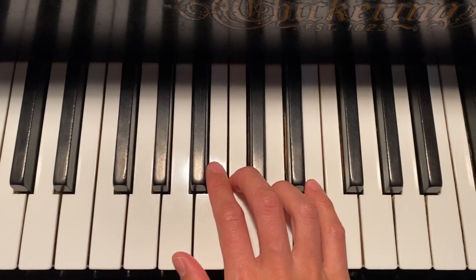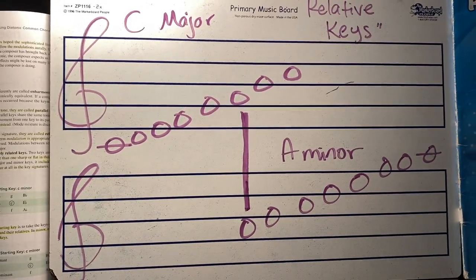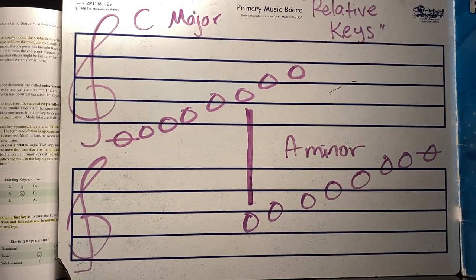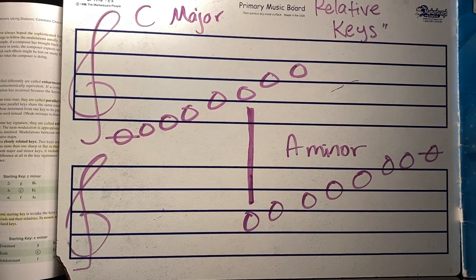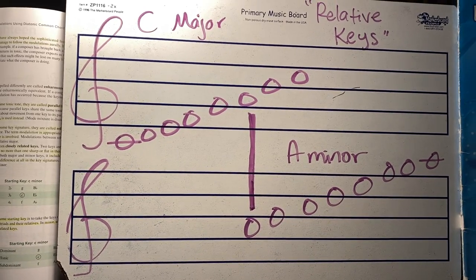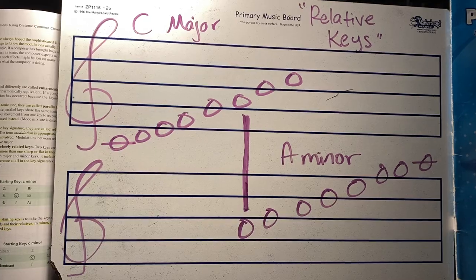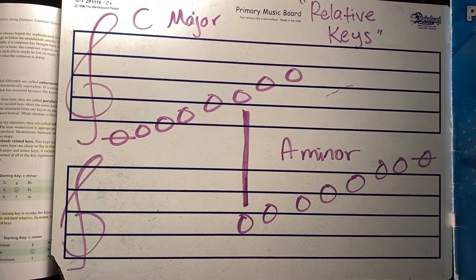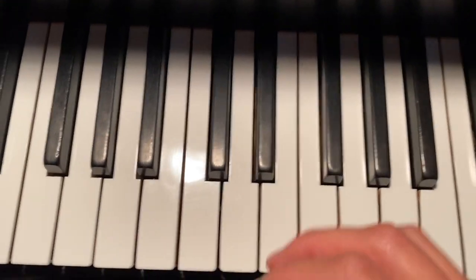When I think of relative minor and relative major, it's like relatives — you're the same blood. Finding the relative minor of C major means it's basically the same notes. The only thing that's different is the tonic.